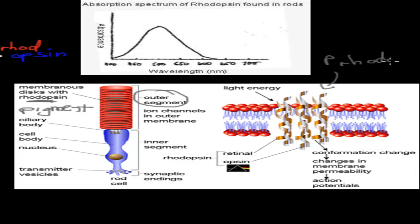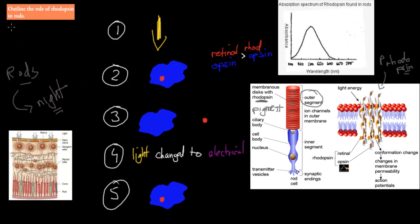The dot point actually says outline the role of rhodopsin in rods, so you need to be able to explain the rods, not just say rhodopsin is important for rods, but mention a couple steps in terms of how rhodopsin helps rods change light into electrical impulses.